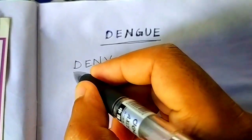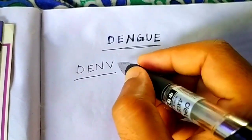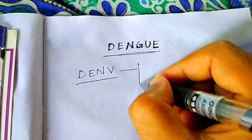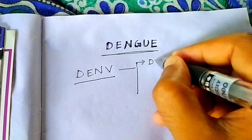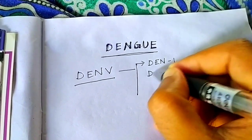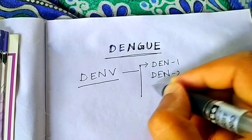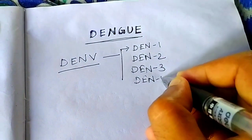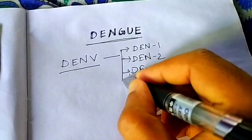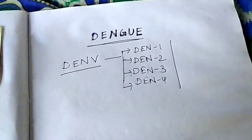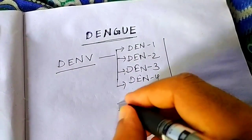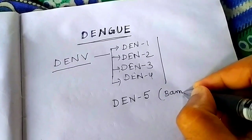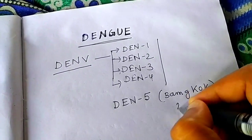Dengue is very relevant nowadays because so many Dengue cases are there in the hospital. Dengue is caused by Dengue Virus, that is DENV. DENV has many serotypes: DEN1, DEN2, DEN3, DEN4 — so these are the 4 serotypes. Recently there is DEN5, recently discovered from Bangkok, discovered in 2013.